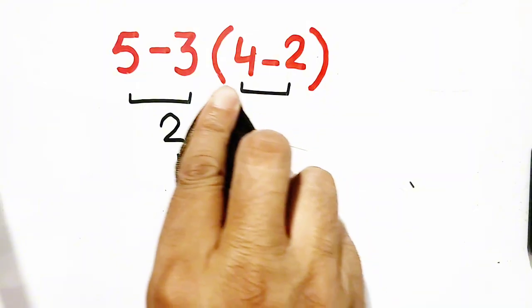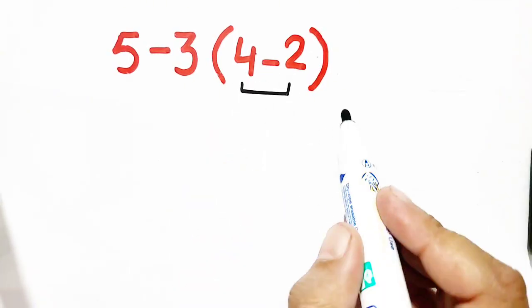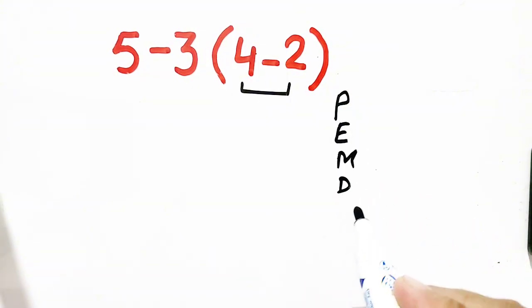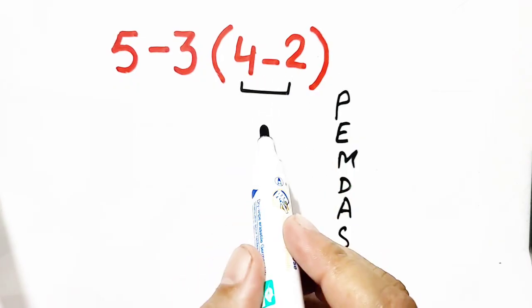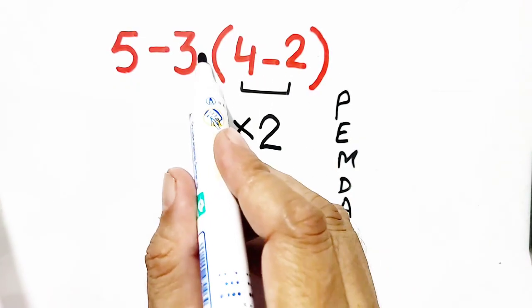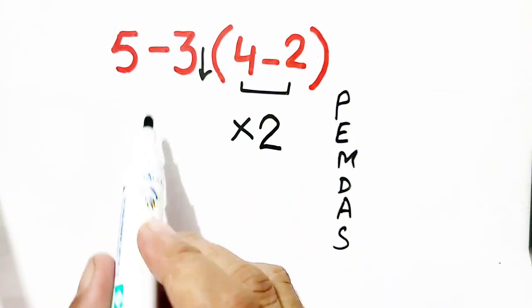So I will solve it again by obeying order of operation. First of all, we have to solve parentheses according to PEMDAS rule. So 4 minus 2 is equal to 2. There is no sign, so it is multiplication sign, and 5 minus 3 as it is.